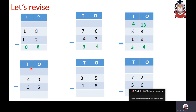Here I have 0 in ones and 5 on bottom. I cannot take away 5 from 0, so I go to tens column and borrow 1 ten. This 4 becomes 3, and this 0 becomes 10. So 10 minus 5 gives 5, and 3 minus 3 gives 0.